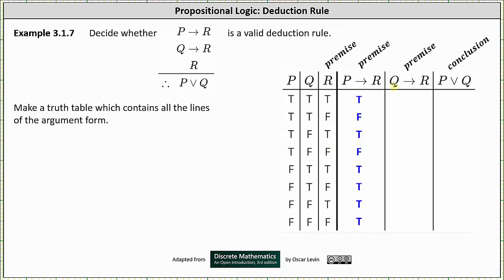Next, the implication if q then r is false only when q is true and r is false; otherwise the implication is true. Analyzing column two and column three, q is true and r is false in row two and row six. These are the two rows in which if q then r is false; in all other rows the implication is true. The column for if q then r is: true, false, true, true, true, true, true, true.